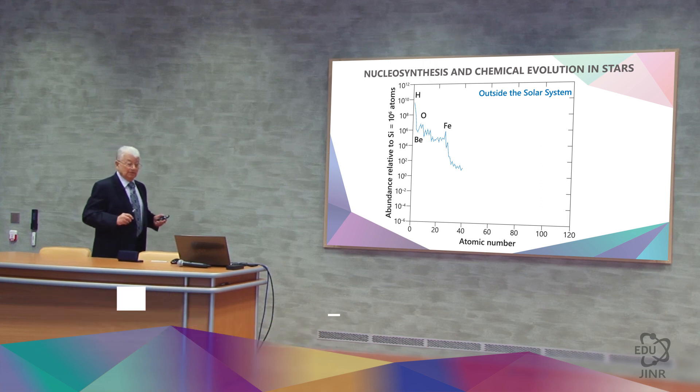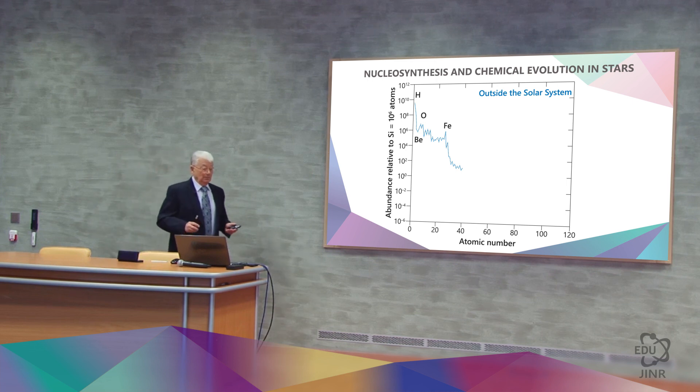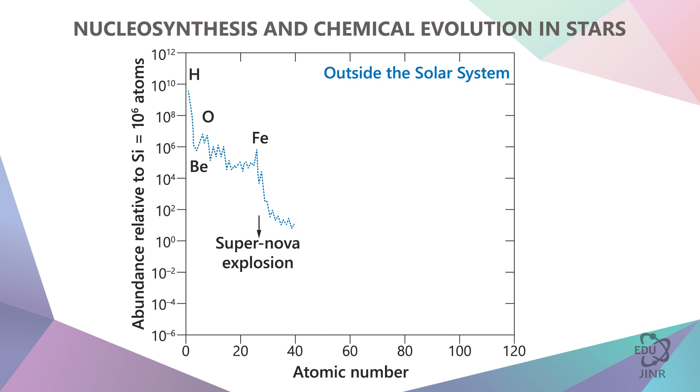This iron will naturally move to the center of the star with its heavier mass, where intense compression will come into effect. The compression will be so strong that a collapse will occur, and this star-turned-supernova will explode as the temperature reaches about 4 times 10 to the power of 9 Kelvin.